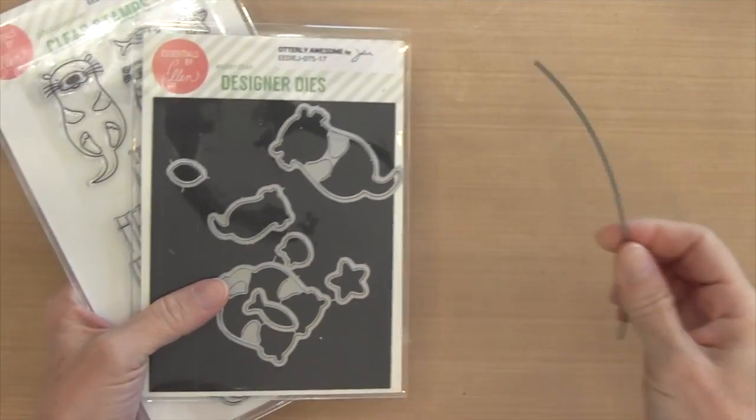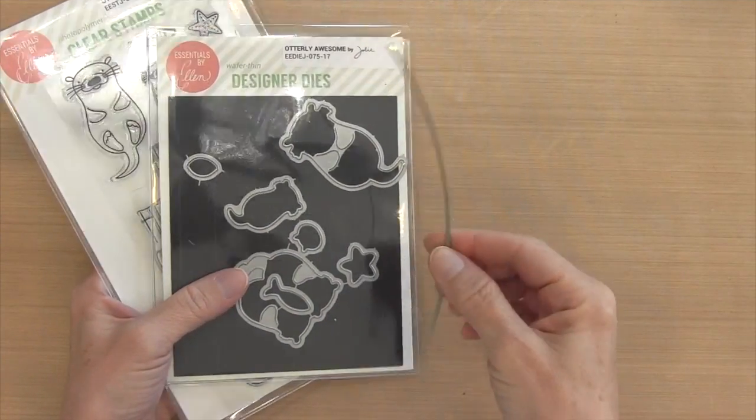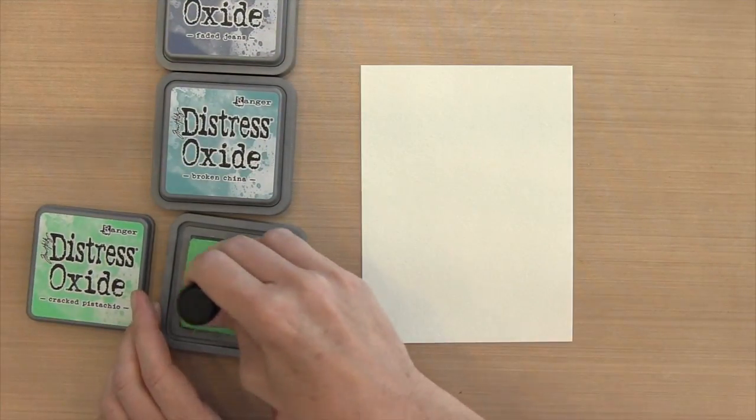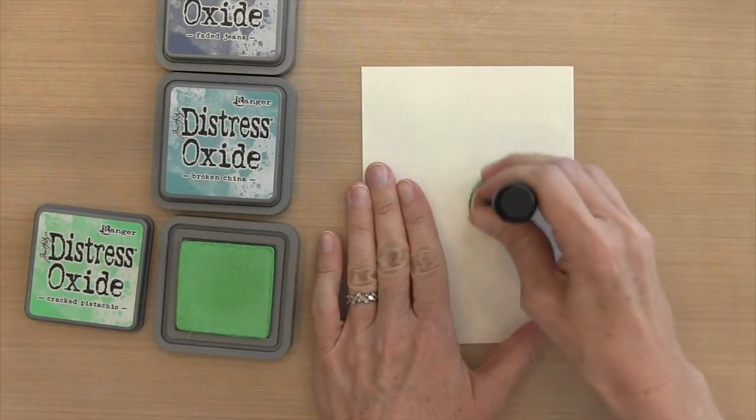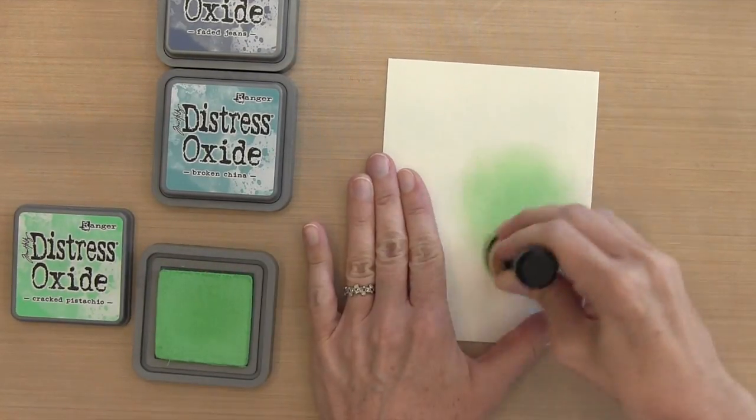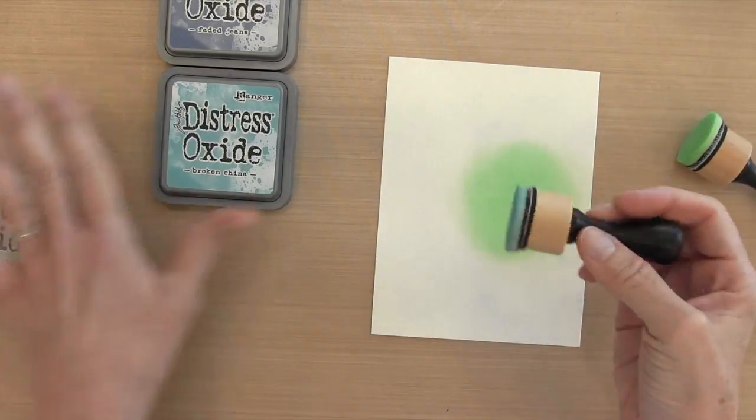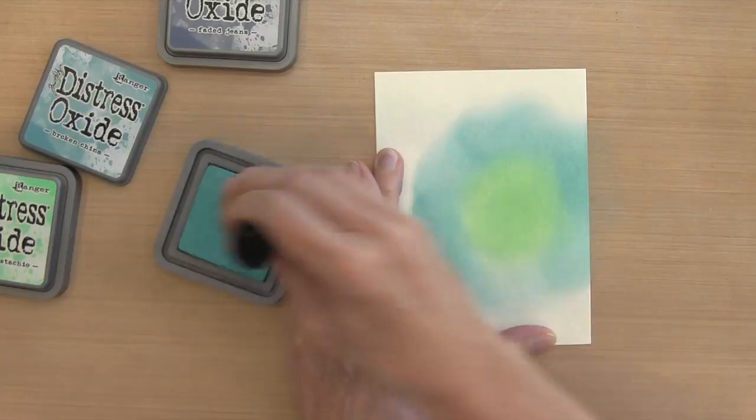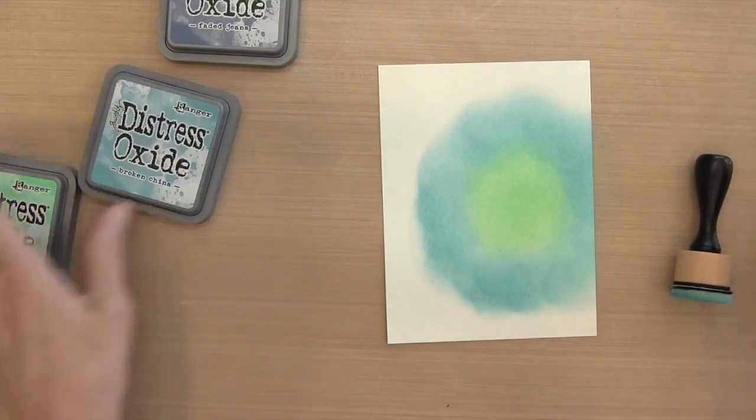I also have this A2 curve die by Simon Says Stamp. I'm going to use my distress oxide inks to create my background, starting with cracked pistachio in the middle. I'm a little off-center here because my otters are going to be sitting to the right.